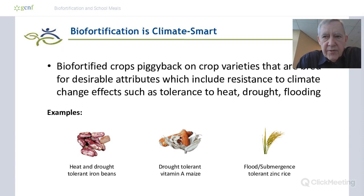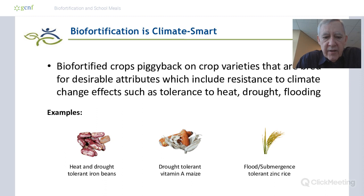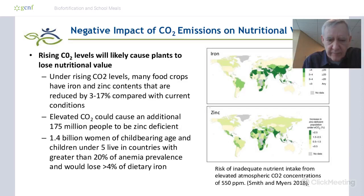What we're doing is piggybacking on the best crops coming out of agricultural research centers. Our system is developing heat and drought-tolerant beans, and we're making sure those beans are also high in iron. In response to climate change, we have drought-tolerant maize and flood-submergence-tolerant rice — those rices are high in zinc, and those maizes are high in provitamin A. So the biofortified crops are climate-smart.